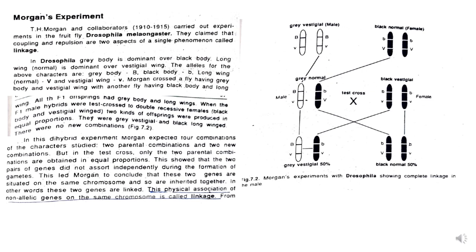Morgan crossed a fly having grey body and vestigial wing with another fly having black body and long wing. In this cross, the male has grey body and vestigial wing and the female has black body with normal wing. When they crossed these two flies, they observed that in F1 all the offspring had grey body and long wings.